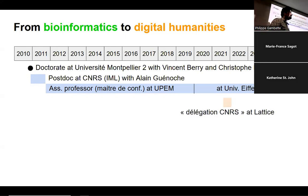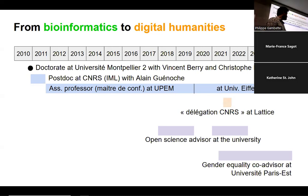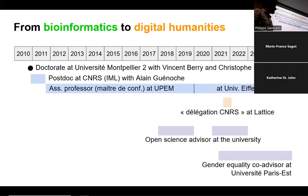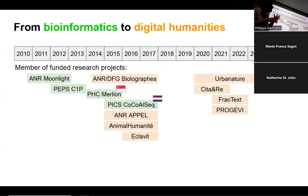I was lucky to get a delegation — meaning full-time research for one semester — at Lattice, a laboratory in natural language processing and linguistics in the south of Paris. I was an advisor for open science at the university in 2028 and 2029, and then helped with the transition of those missions after the new university was created. I'm also currently a gender equality co-advisor at Université Paris-Est alongside David François. I was involved in several projects.